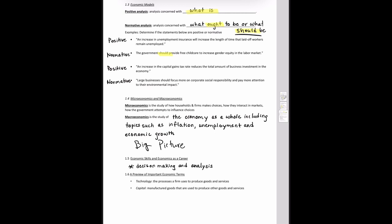Finally, we have a preview of important economic terms. We have two of them here, technology and capital. These terms aren't necessarily defined in the way you would think. Technology, in terms of economics, is defined as the processes a firm uses to produce goods and services, while capital is defined as the actual manufactured goods that are used to produce other goods and services, not capital in the traditional sense you would think of in finance. With that being said, if you have any questions about chapter one, please feel free to let me know. Thanks.